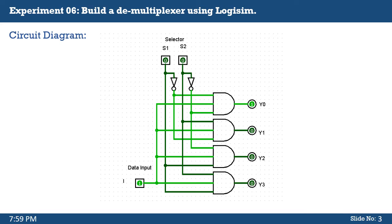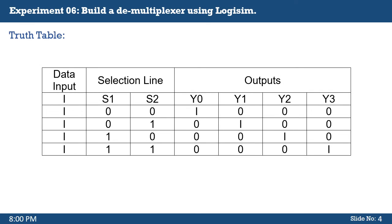This is a one-to-four line demultiplexer with one data input. It uses two selection lines S1 and S2 to determine which one of the four outputs — Y0 to Y3 — is routed from the input. Its characteristics can be described in this simplified truth table.